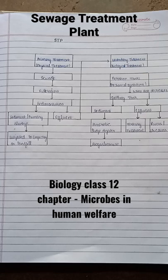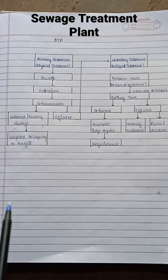Sewage treatment plant. A sewage treatment plant consists of two types of treatment. First, primary treatment and second, secondary treatment.